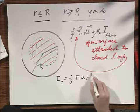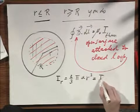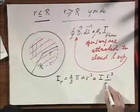That immediately follows from what we just did. Alpha r cubed. This is alpha. And this is also the same as I, the total I, r cubed divided by capital R cubed.